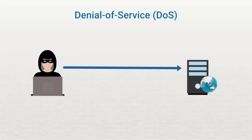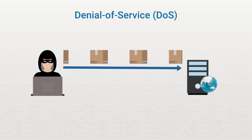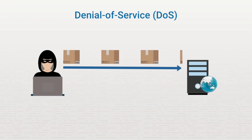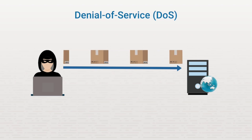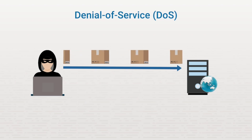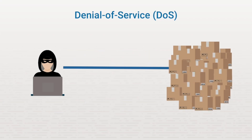DOS attacks use a single computer with a single connection to attack a single target. The attacker uses some sneaky method to send a large number of legitimate-looking requests to the server to make sure it can't determine which requests are valid and which aren't. This barrage of requests overwhelms the system to the point that the server can't manage the capacity, making it inaccessible to other users.